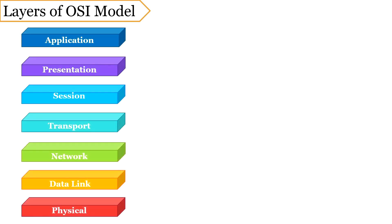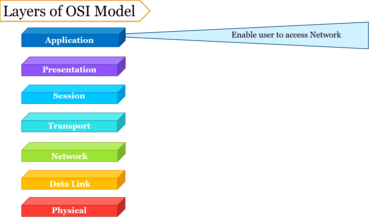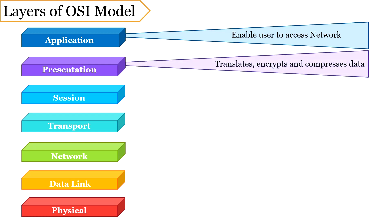Now let us discuss the layers of the OSI model. The model has seven layers and each layer has a well-defined function. The first layer through which the user interacts is the application layer — this layer facilitates the user, that may either be a human or a software, to access the network. Next is the presentation layer, which is concerned with the syntax and semantics of information exchanged between two communicating systems; it translates, encrypts, or compresses the data to be exchanged.